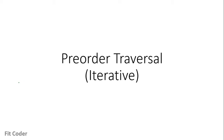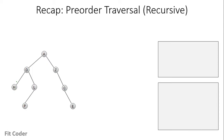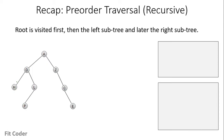In this video, I will explain the iterative method of doing the pre-order traversal. In pre-order traversal, we first visit the root, then we visit the left subtree, and at the last we visit the right subtree. So the order is root, left, and then right.